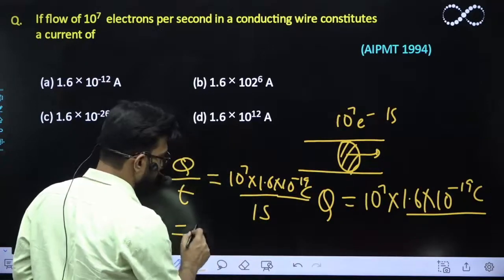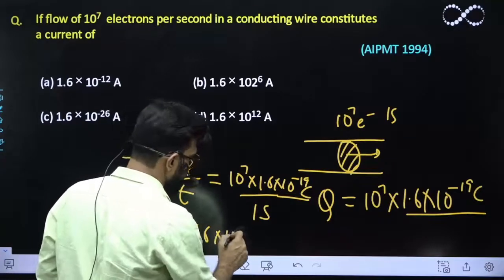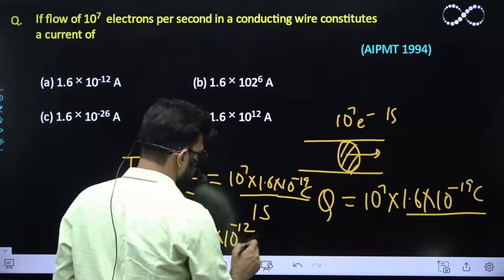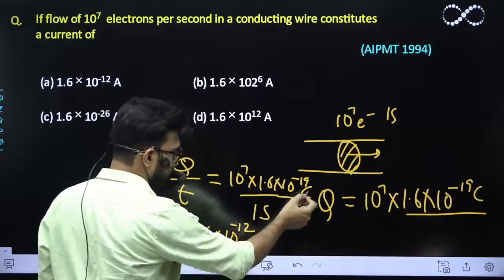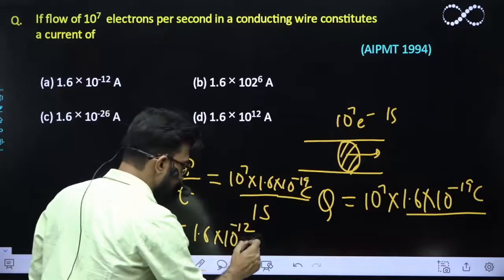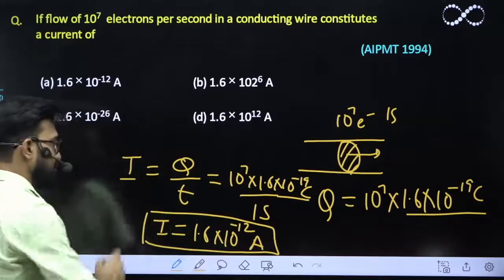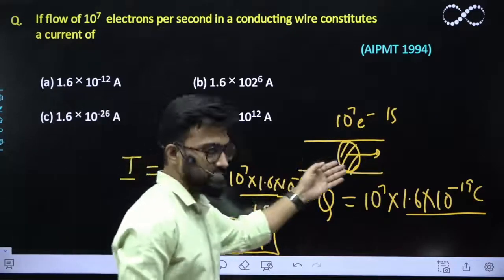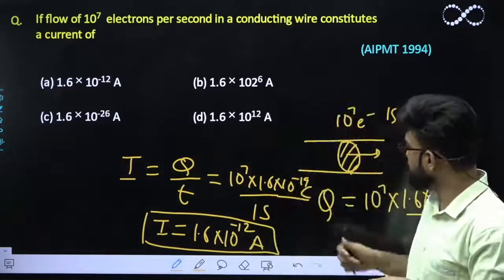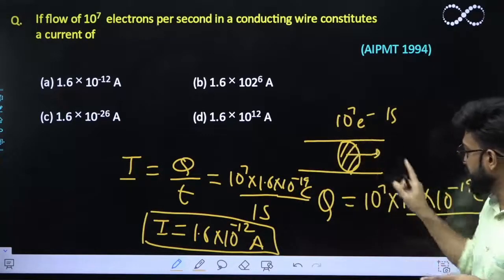So it is equivalent to 1.6 into 10 raise to power minus 12, and this is nothing but coulomb per second, which is nothing but ampere. So this much of current will be constituting, and this much of current will be flowing in this particular wire. Just you need to remember the charge on one electron is given by relationship, it is equivalent to 1.6 into 10 raise to power minus 19 coulomb.